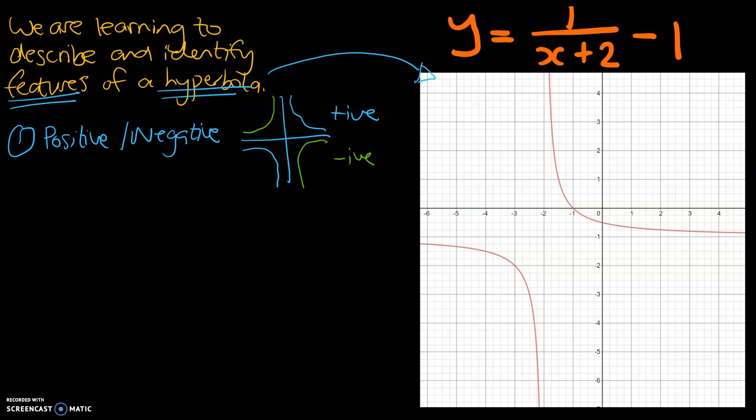The second and arguably the most important feature is something new to us, something called asymptotes. Asymptotes are lines where the graphs will never ever touch. And each hyperbole will have two asymptotes.